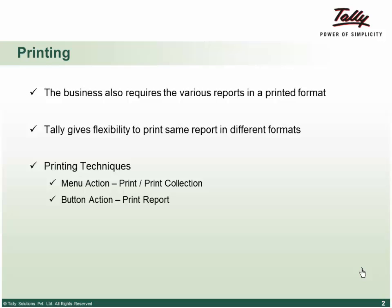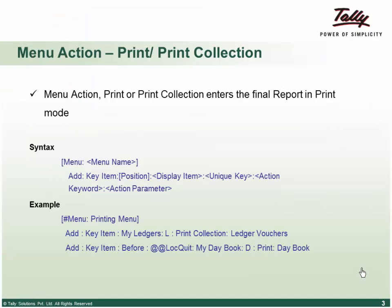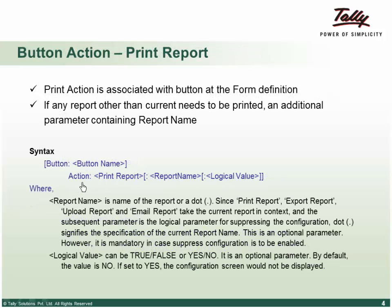This printing action can be initiated from a menu definition or a button definition. In menu definition, we have two actions: print and print collection. In a button definition, we have print and print report. The menu action print or print collection finally enters a report in a print board. At menu definition, you can add a key item. The syntax at menu definition is the same as for display — the only difference is the action name. If it's a print collection, it has to be the name of a collection; if it's a print action, it has to be the name of a report.